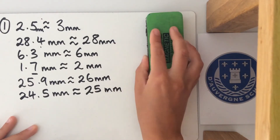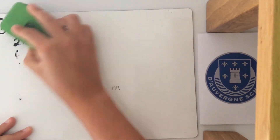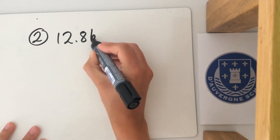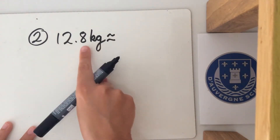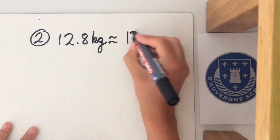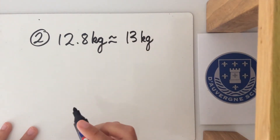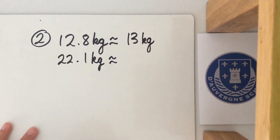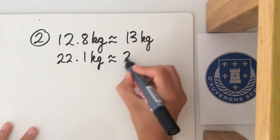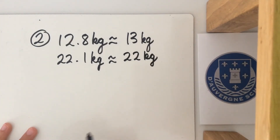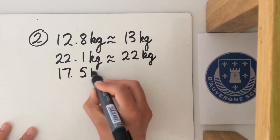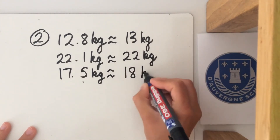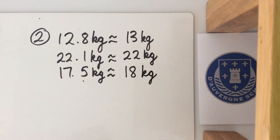Let's have a look at question 2. We have 12.8 kilograms — that's approximately 13 kilograms, we round it up because of the 8. Then we have 22.5 kilograms — that's a 5, we round it up to 23 kilograms. Well done if you've got those correct.